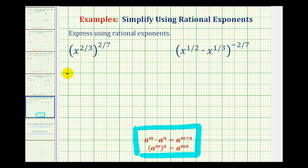So this is going to be equal to x raised to the power of two-thirds times two-sevenths. We'll have x raised to the fractional power, where the numerator is two times two, or four, and the denominator is three times seven, which is twenty-one.